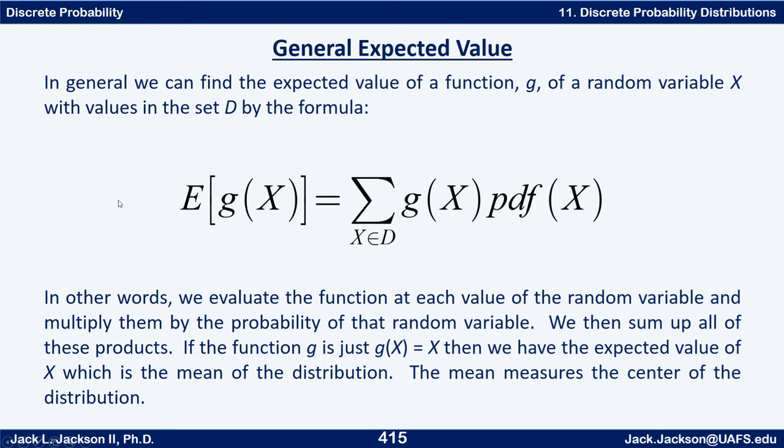Before we do this, remember we talked about the expected value last time. I want to generalize this a little bit. If we talk about the expected value of some function of a random variable X, we define that to be: take that function g(X), multiply by the probability (the PDF) of that X value, and then add those up for all X's that are in the domain—all possible X values.